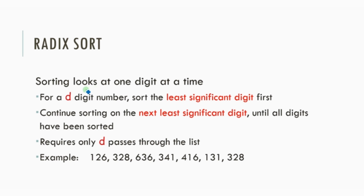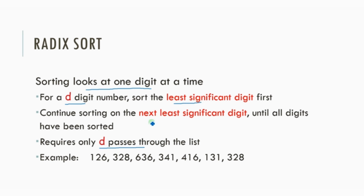Radix Sort looks at one digit at a time to sort the numbers. So if there are d digits, it will require d passes through the list. The numbers are sorted based on the least significant digit first, then based on the next least significant digit, and so on.